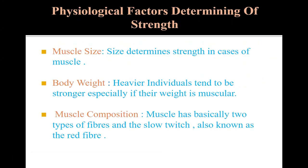Let's start with the physiological factors determining strength. Strength comes from various physiological factors. First point: muscle size. Size determines strength in the case of muscles — more the muscle mass, more forceful is the contraction. While the force produced is the same in male and female for the same mass of muscle, males tend to be stronger because of higher muscle mass and longer size. Muscle size and strength can be improved by strength training in both cases.